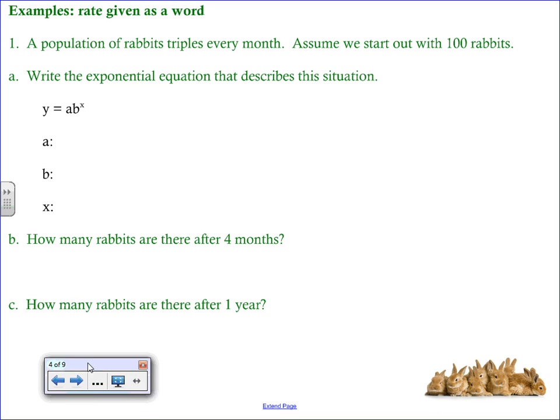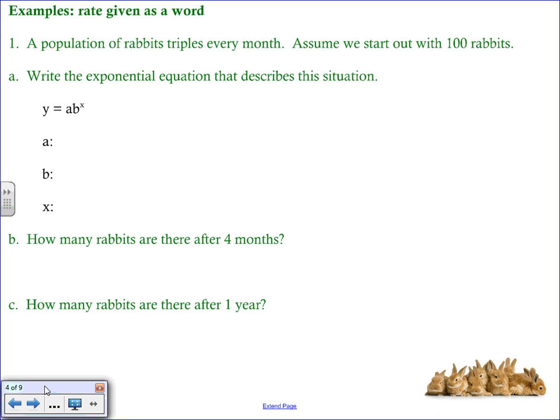Let's work through an example. We know that rabbits reproduce very quickly and this particular population of rabbits triples every month. Assuming we start out with 100 rabbits we would like you to do a couple of things working with the exponential growth model. The first thing we're going to do is just write the exponential equation that represents the situation.